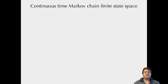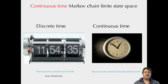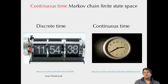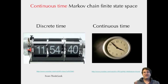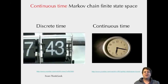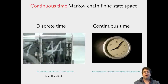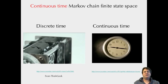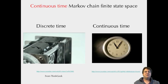Continuous-time Markov chain and finite-state space sounds like a mouthful. Continuous-time simply means we're not dividing time into discrete stages — seconds, minutes, or millions of years. We're doing a continuous process, so I can wait 10 seconds, 10.43 seconds, or 15.251 million years.